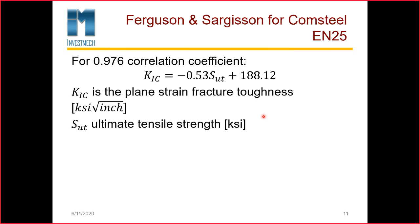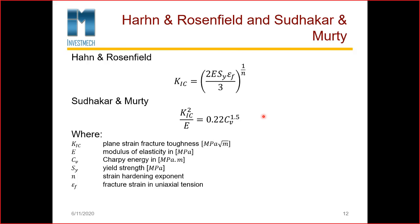For EN25, with a 0.976 correlation coefficient, K1C equals minus 0.53 SUT plus 188.12, where K1C is the plane strain fracture toughness in KSI inch and SUT is the ultimate tensile strength in KSI. You can convert this to MPa if you wish. There are other equations as well — one in terms of yield strength and the strain at fracture, and another as a function of Charpy impact, where they take the square root of 2 times the Charpy V energy times E, where E is the modulus of elasticity. So you can also use the modulus of elasticity with Charpy V to calculate K1C.